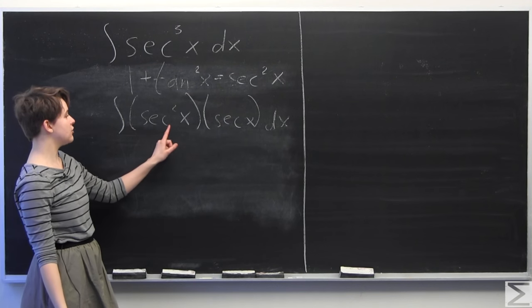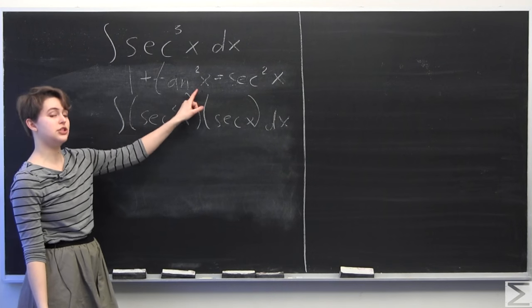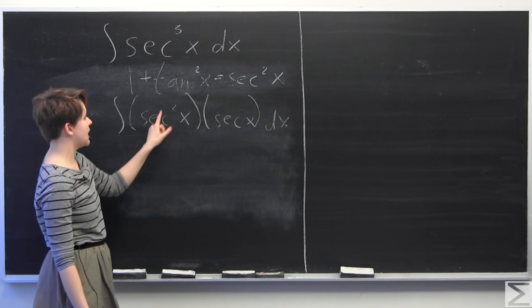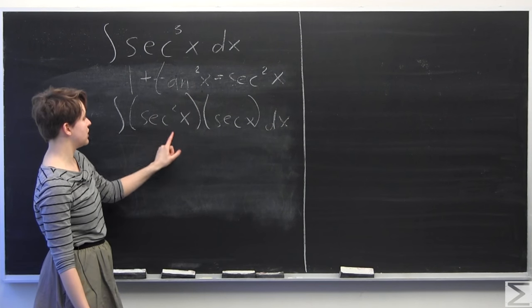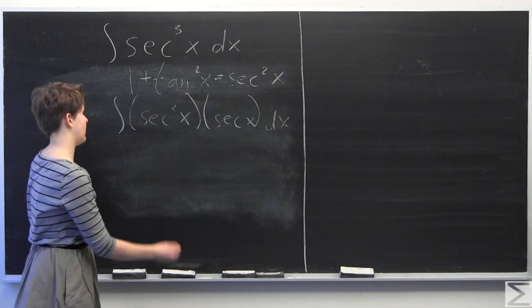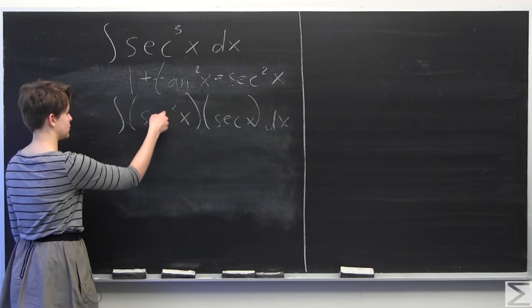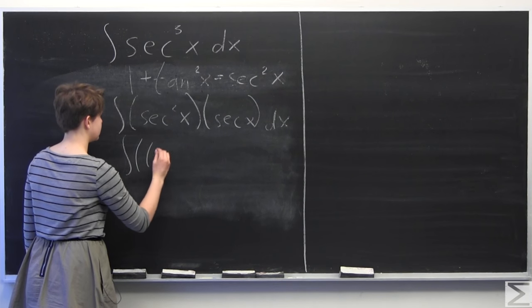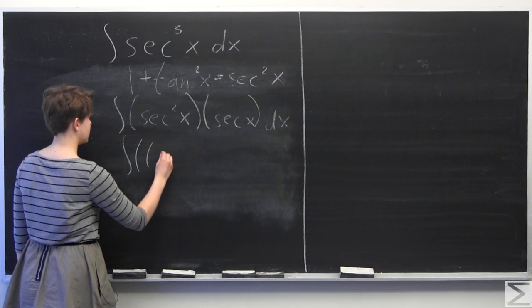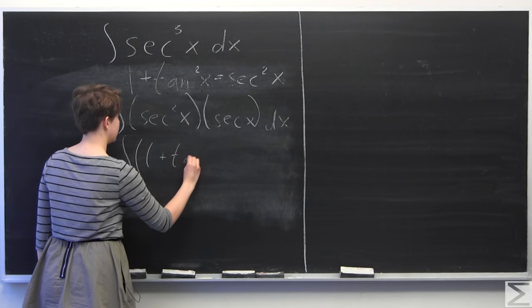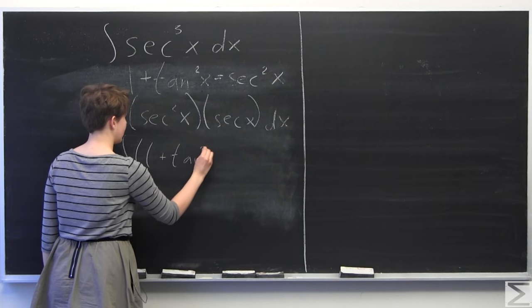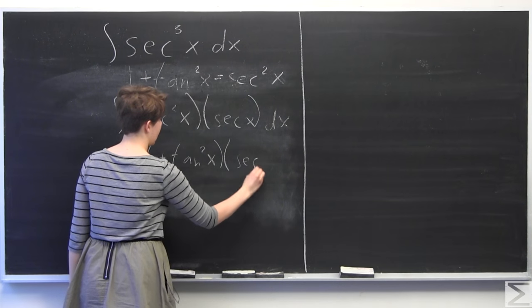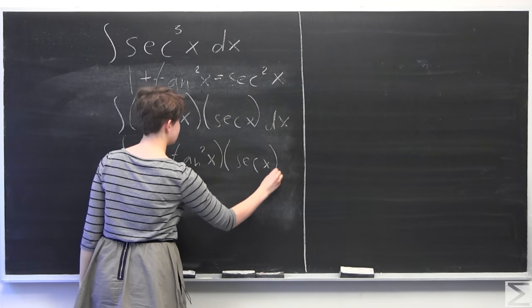The reason I did this is because I want to use this trigonometric identity. So for the next step, I'm going to plug in this trig identity for secant squared of x. So instead of secant squared of x, we have 1 plus tangent squared of x, times secant of x.